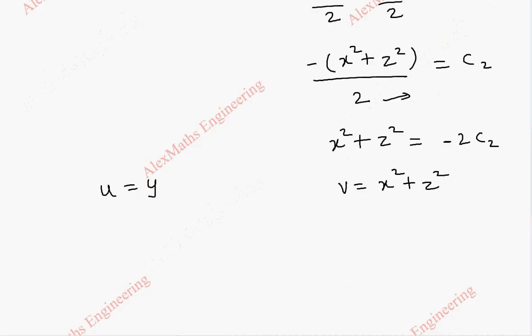Now our general solution is in the form of f of u comma v equal to 0. So it is f of y comma x square plus z square equal to 0.